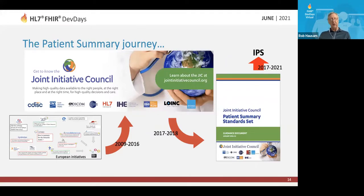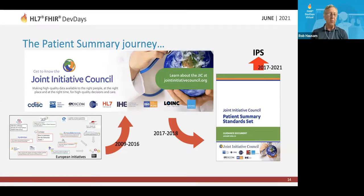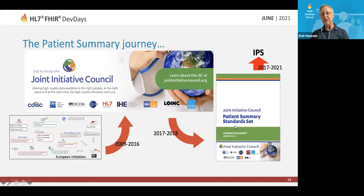This slide shows a little bit about where we came from and how we got here. It shows some initial European projects that were precursors to this work. Around 2009, it started getting looked at in the Joint Initiative Council — a group involving multiple organizations that tries to coordinate standards work so various standards organizations don't duplicate each other's efforts but work together and enhance the value of everyone's work. They produced a document called the Patient Summary Standard Set, and that work ultimately led to what we see in the IPS standards today.